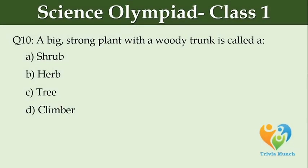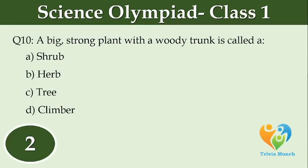A big strong plant with a woody trunk is called a dash. Option A: Shrub. Option B: Herb. Option C: Tree. Option D: Climber.